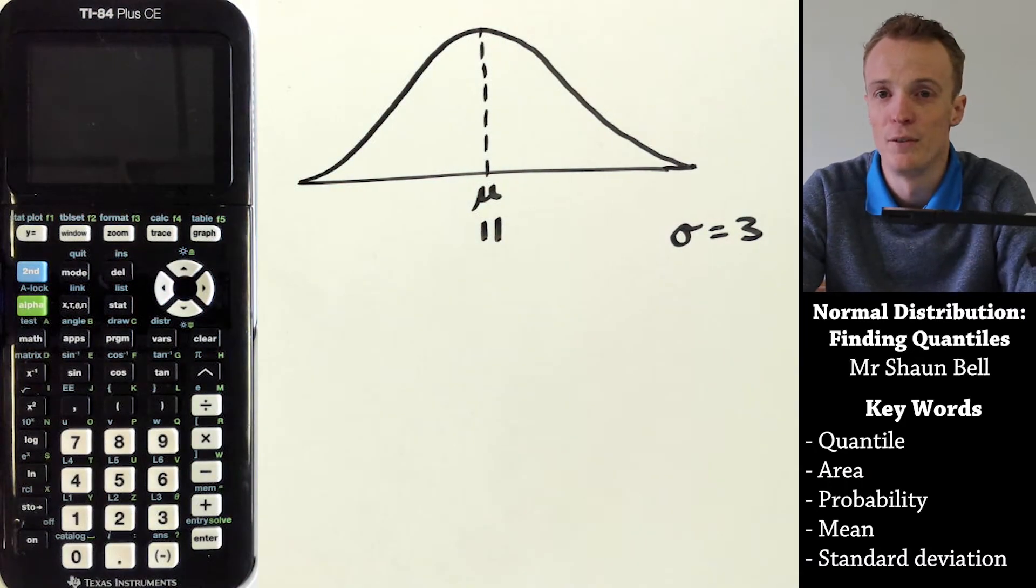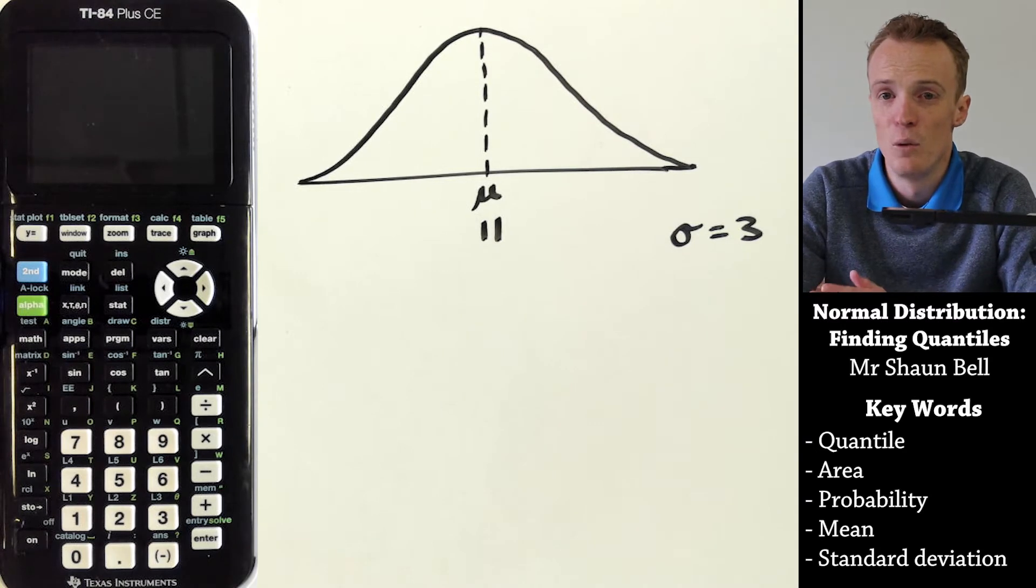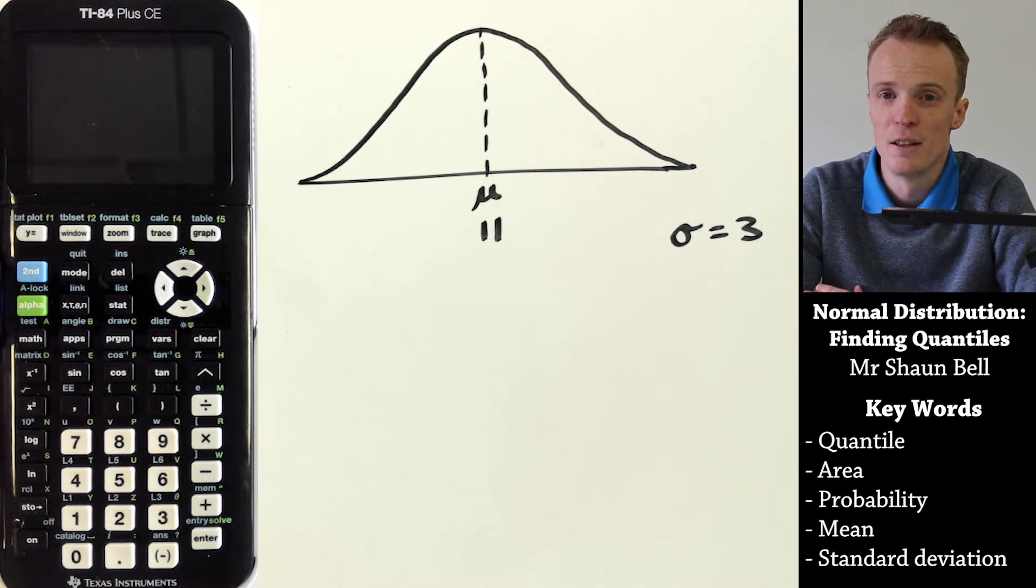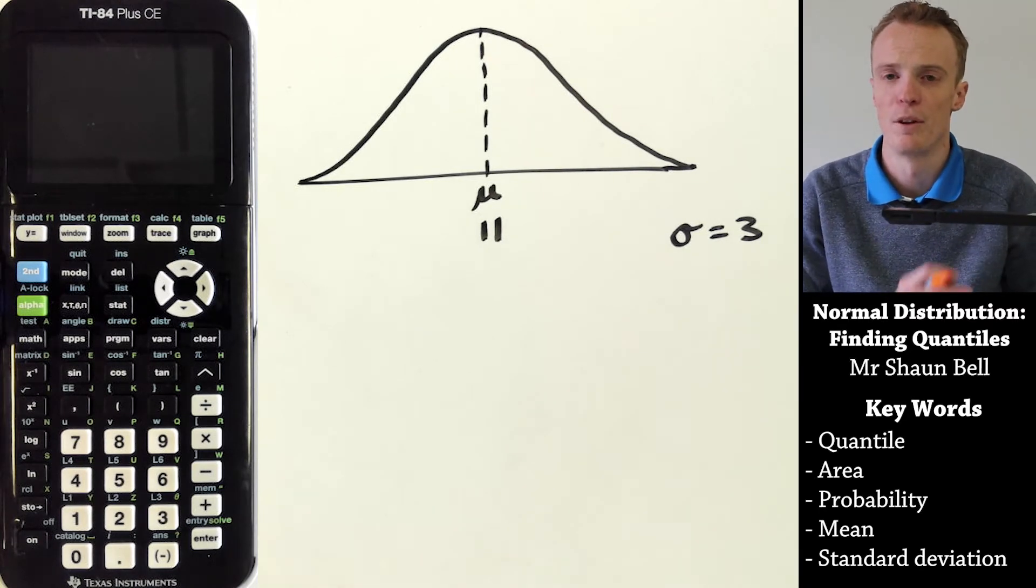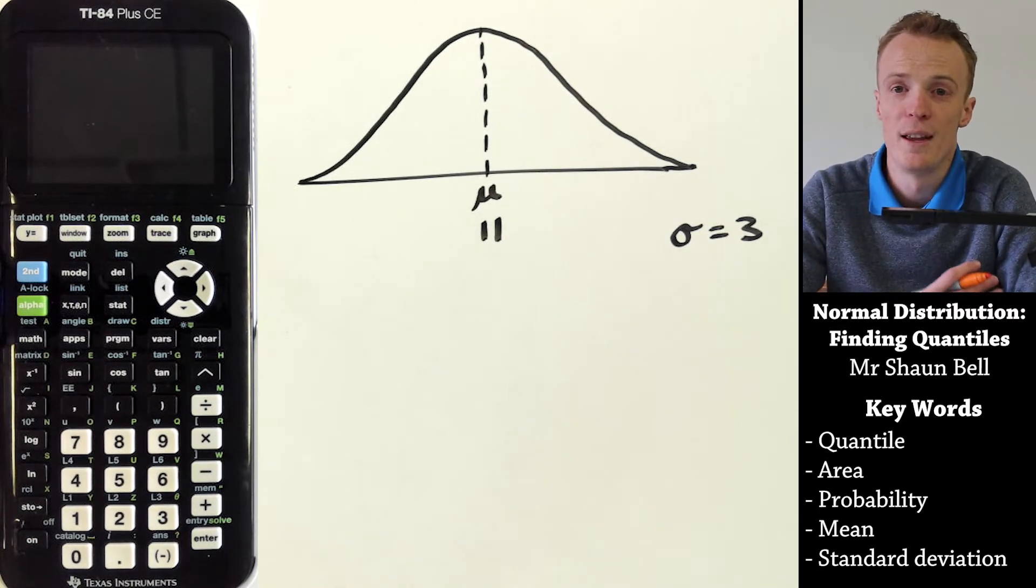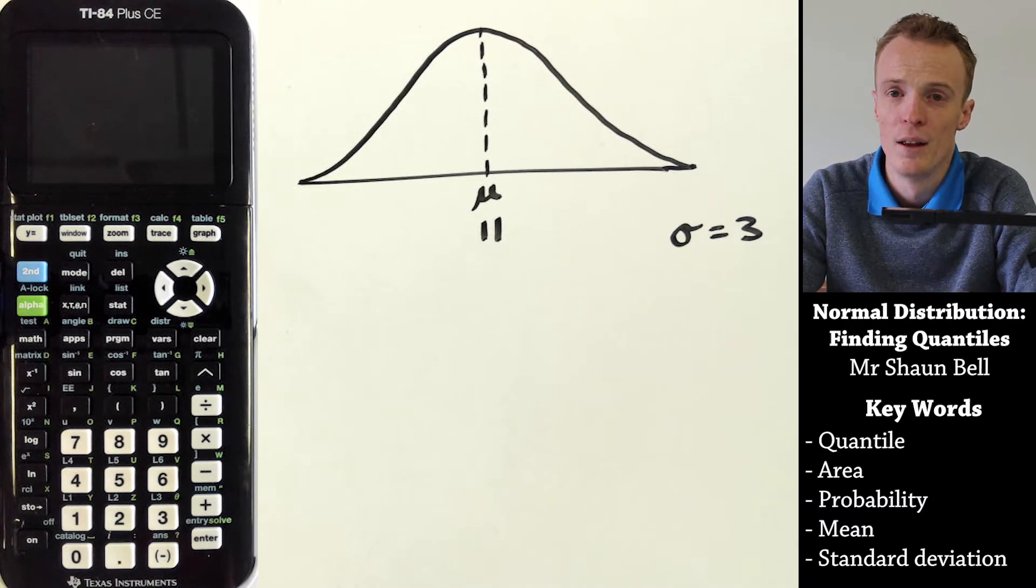Let's pretend for the purpose of this video that these were scores in a contest. To advance to the next round, you need to be in the top 70%, so we're cutting off the bottom 30%. We need to work out what the minimum score is to advance.